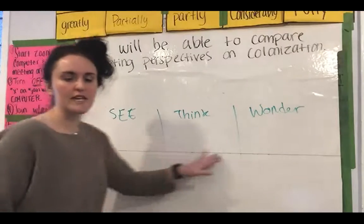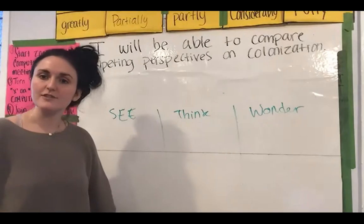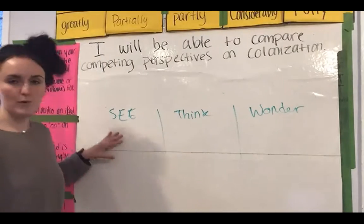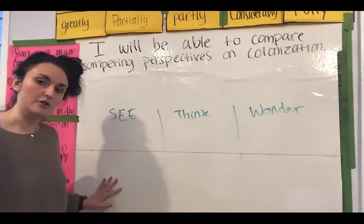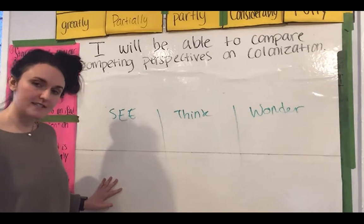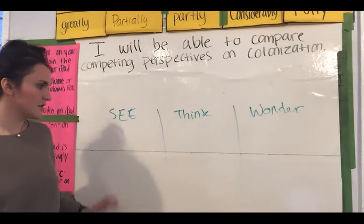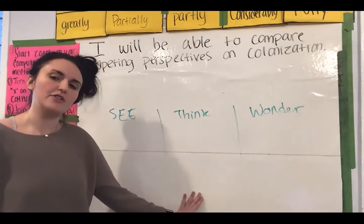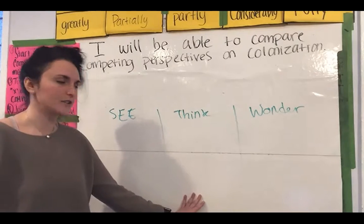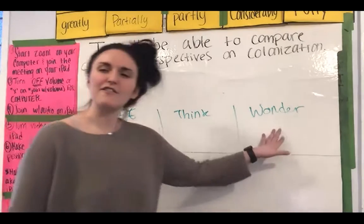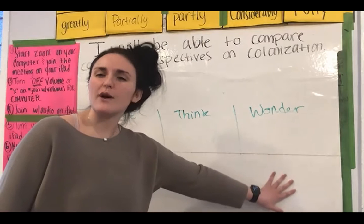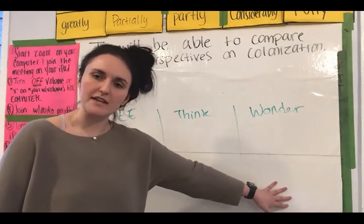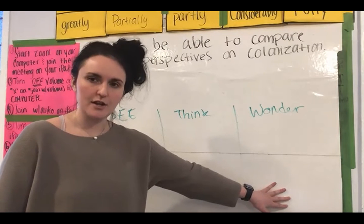The See-Think-Wonder routine is one we're going to use pretty often in social studies. It's when we jot down what we see — usually five to six details — we write down what we think is happening in the photo or image, and then finally we create questions and wonderings based on what we see in the image.